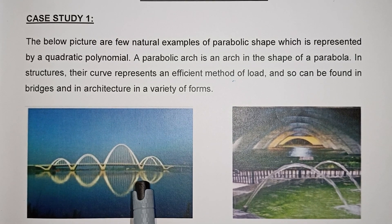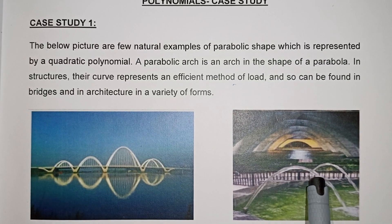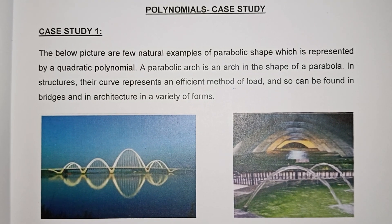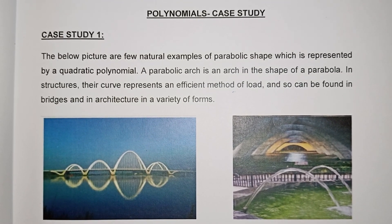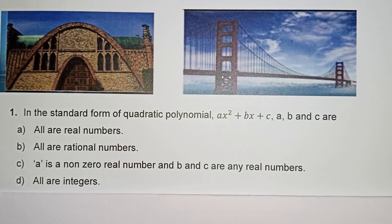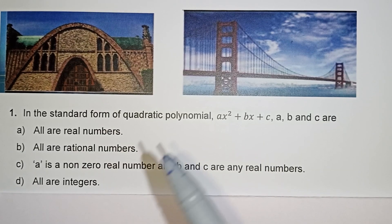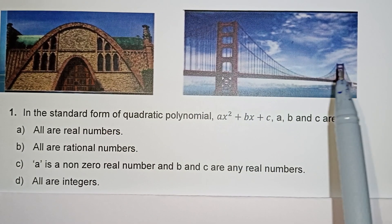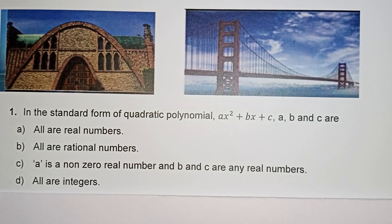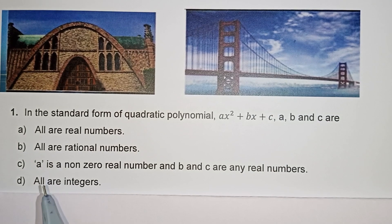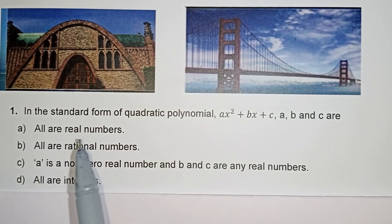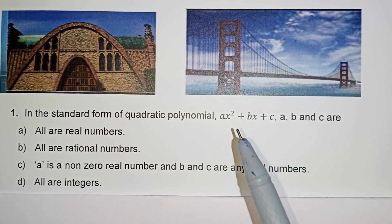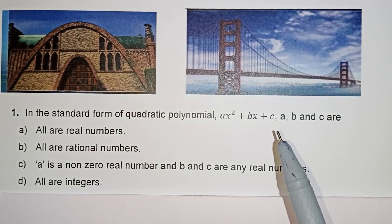If you have a parabolic arch, you can see the U-shape. This is an arch and bridge. There is a parabolic formula. The standard form of a quadratic polynomial is ax² plus bx plus c.